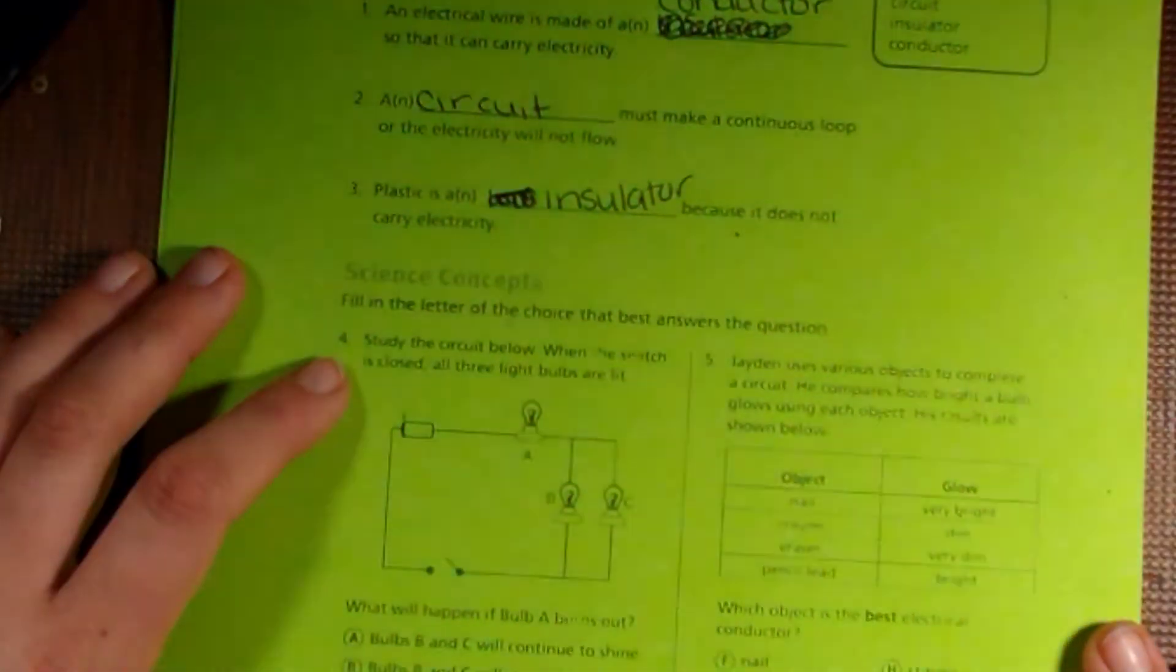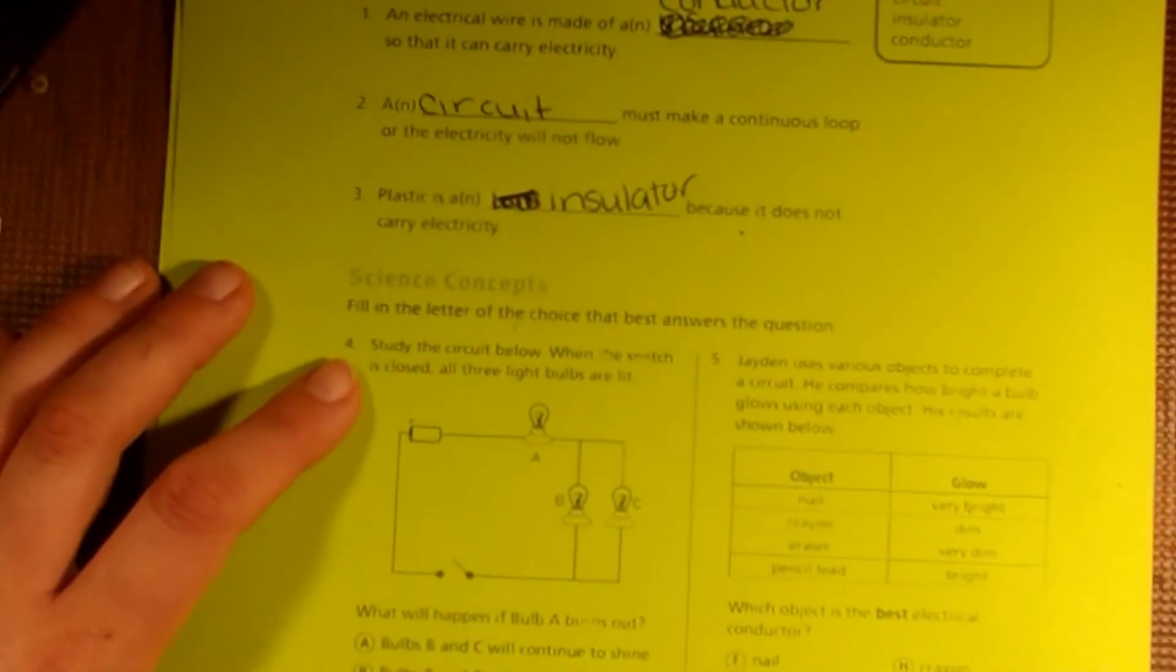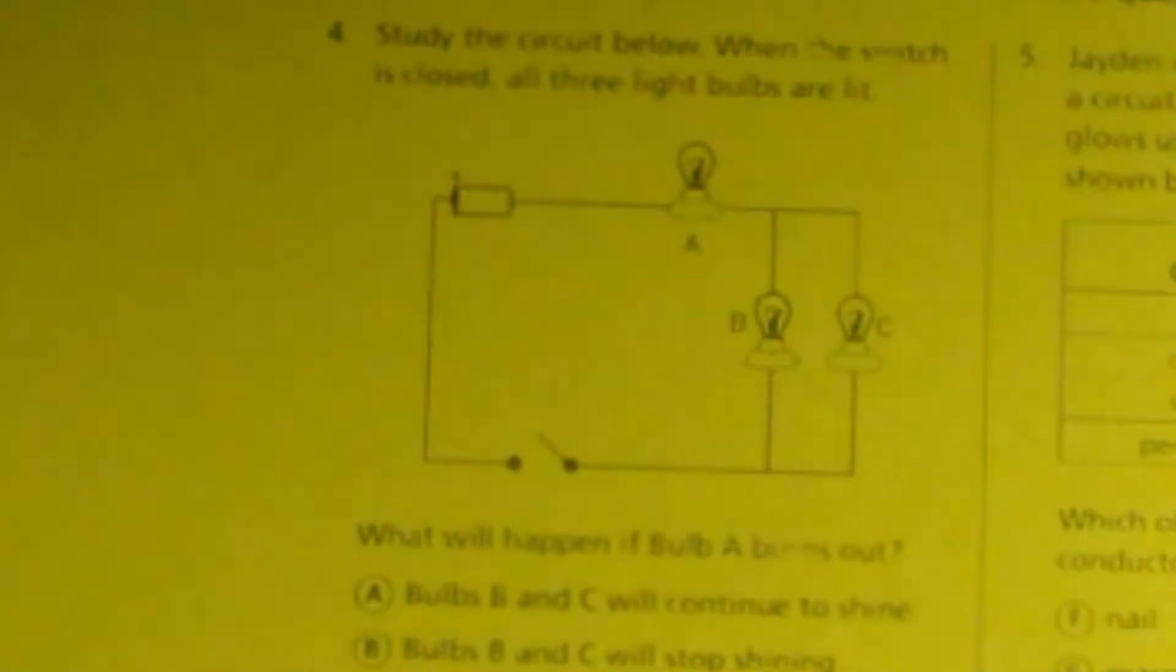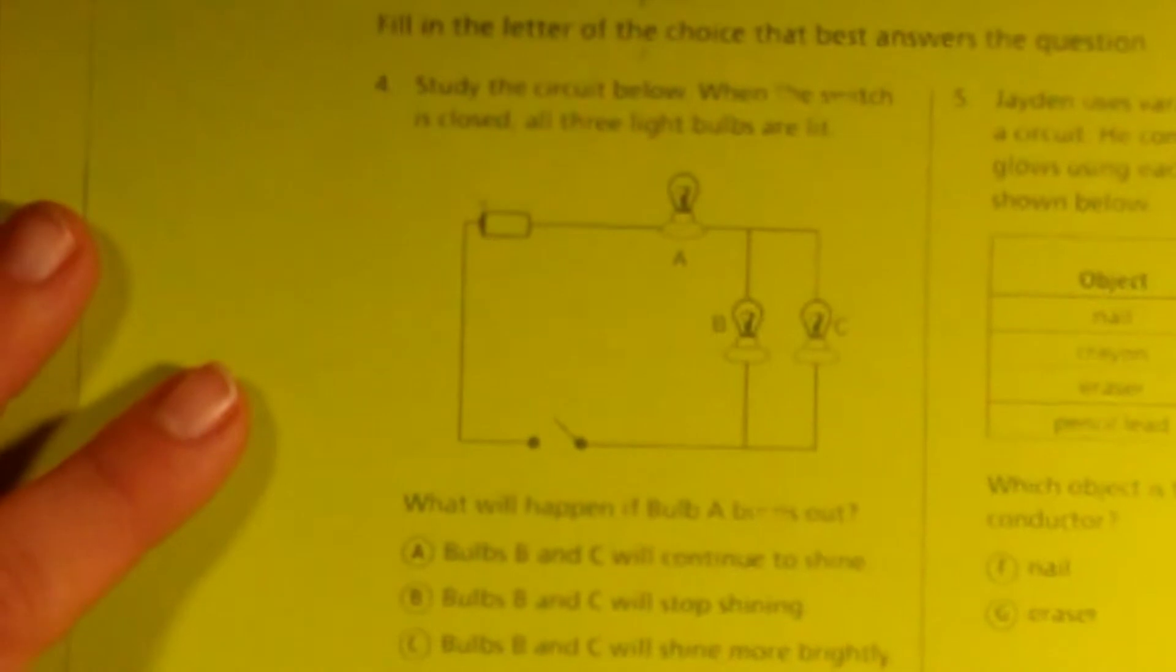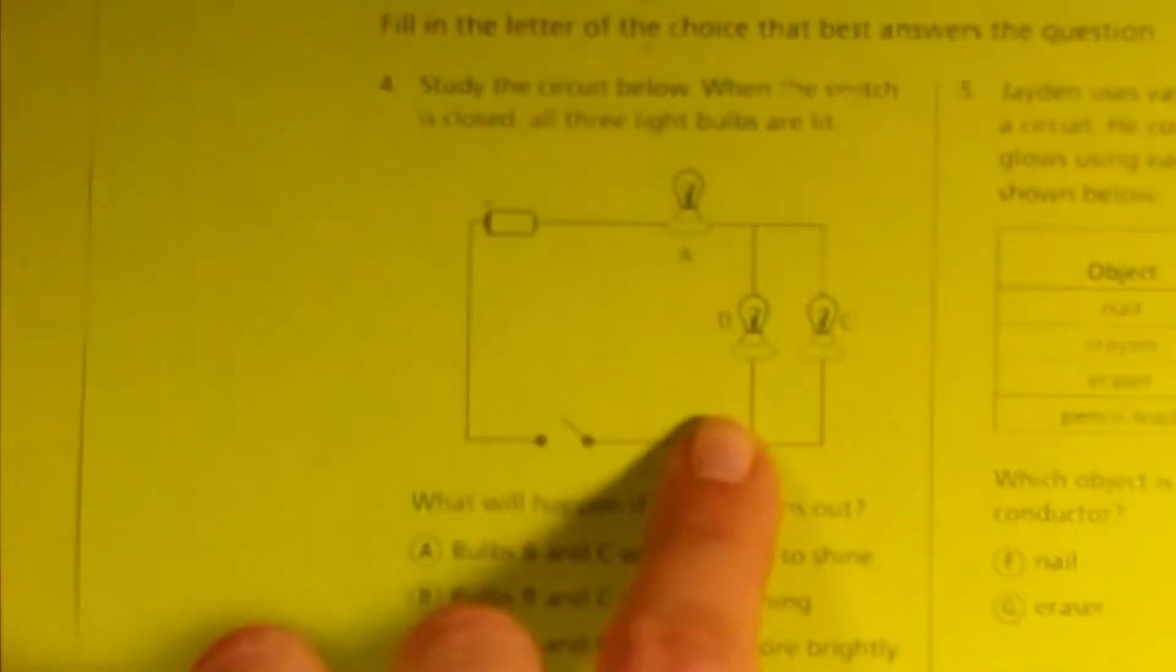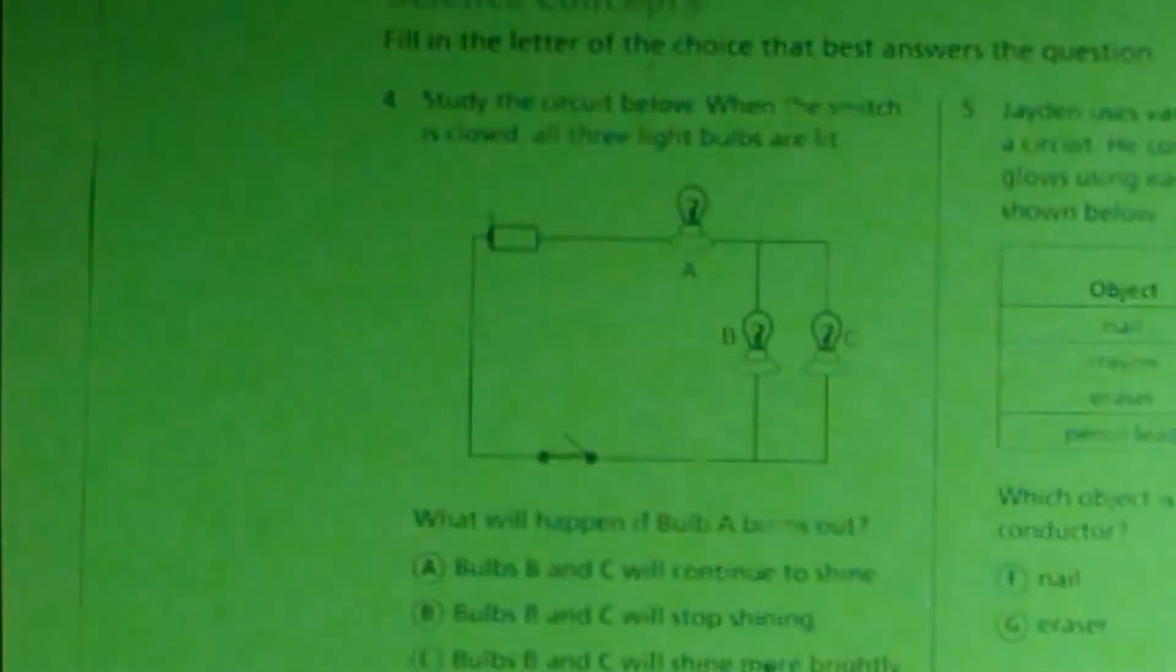Our next question, study the circuit below. When the switch is closed, all three light bulbs are lit. So we close the switch, all of them are lit.